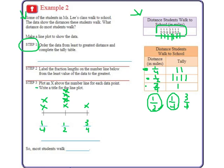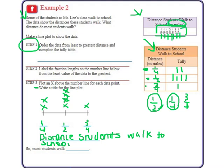Alright, and now I need to, last but not least, write a title for the line plot. We're talking about distances that they're walking to school, so I'm just going to call it distance students walk to school. And if we look closely, we know that this is in miles. So most students will walk, we have the most X's on 1 and 1/2 of a mile. So 1 and 1/2 mile.